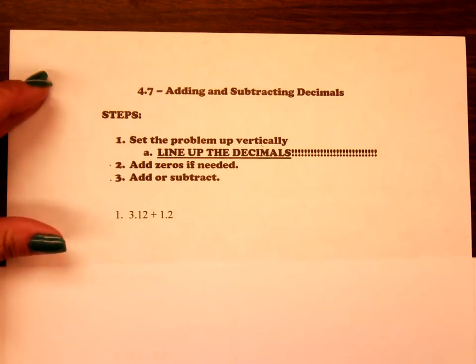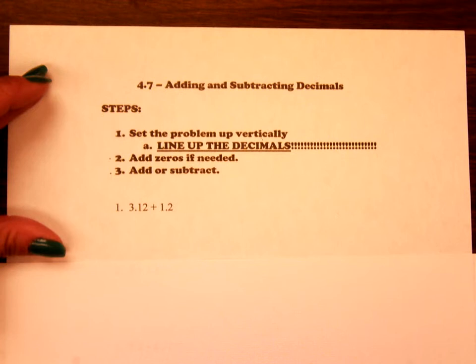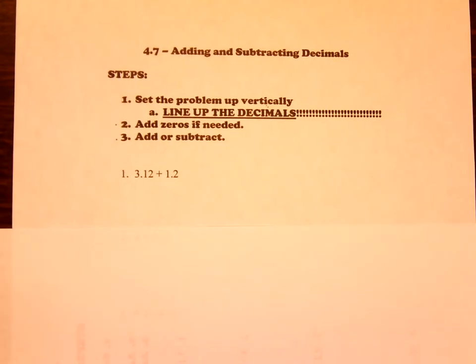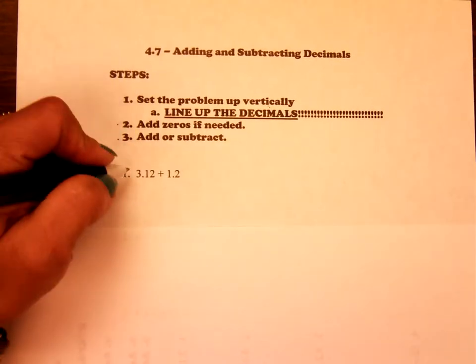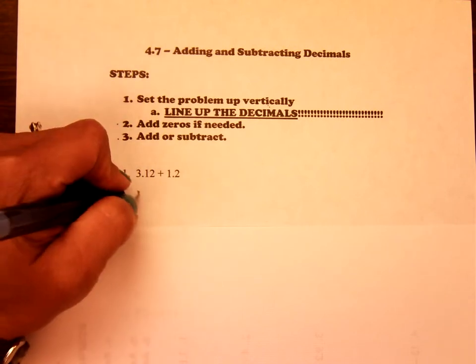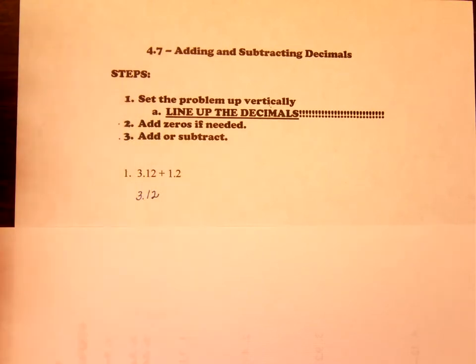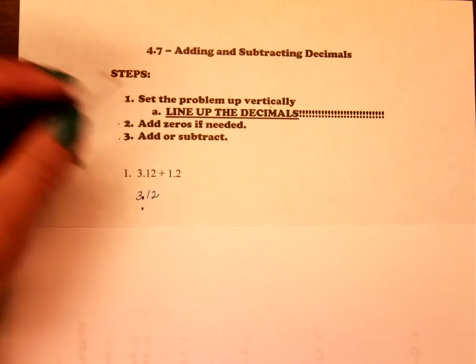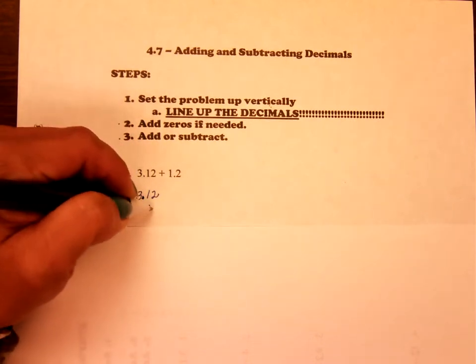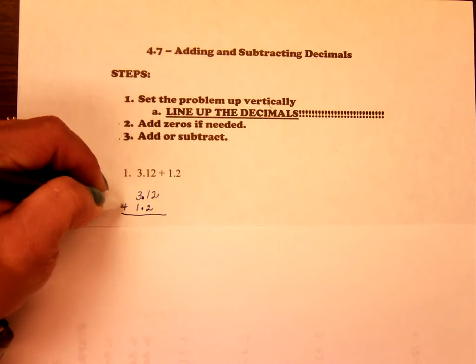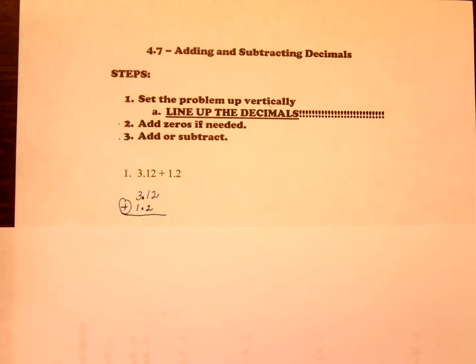So here is your first example. You have 3.12 plus 1.2. So you need to make sure that you set up the problem vertically. So you write 3.12. Line up your decimals. Put your decimal down so your decimals are lined up. And then you just write 1 and 2. And you know that you're adding. Make sure you know that you're adding and not subtracting.